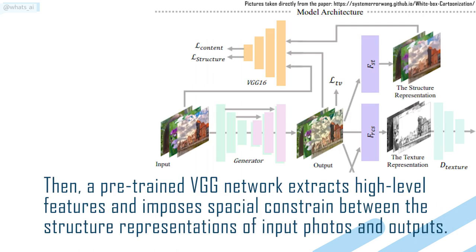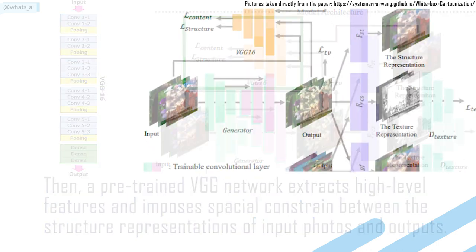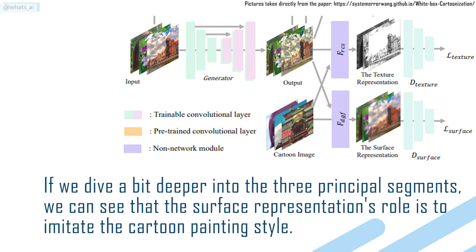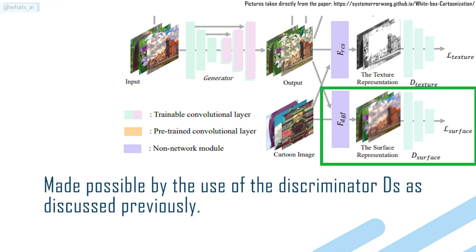A pre-trained VGG network extracts high-level features and imposes spatial constraints between the structure representations of input photos and outputs. The surface representation's role is to imitate the cartoon painting style, made possible by the use of the discriminator DS as discussed previously.